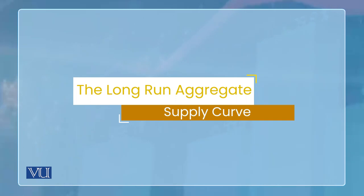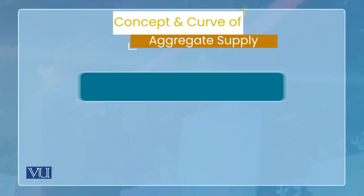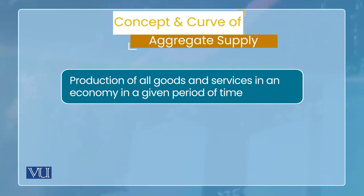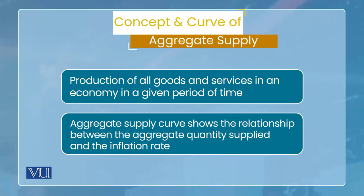First of all, I would like to define what is meant by aggregate supply. Aggregate supply سے یہ مراد ہوتا ہے کہ economy میں aggregate level پہ جتنی goods and services ایک سال کے اندر produce ہوتی ہیں، وہ ہماری aggregate supply ہے۔ Aggregate supply curve، total output کو inflation rate کے ساتھ relate کرتا ہے — یہ relationship ہی aggregate supply curve represent کرتا ہے۔